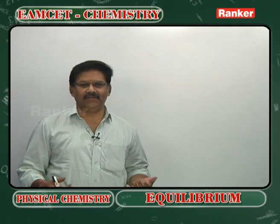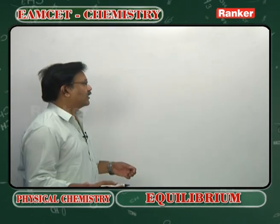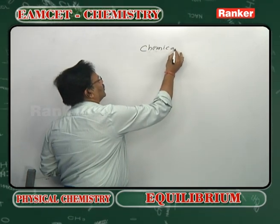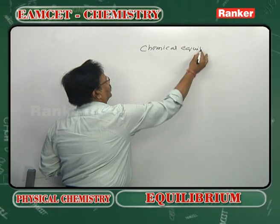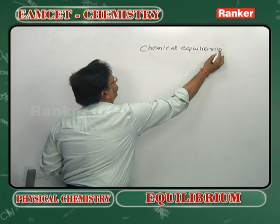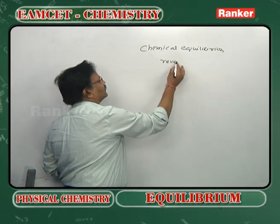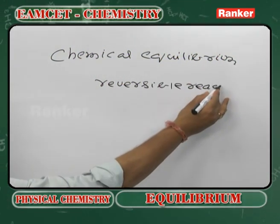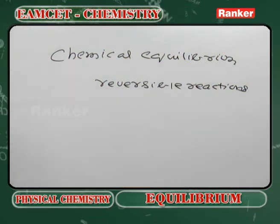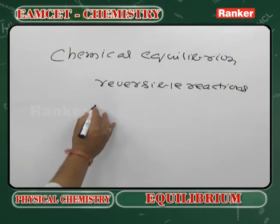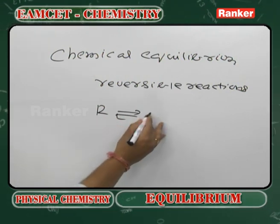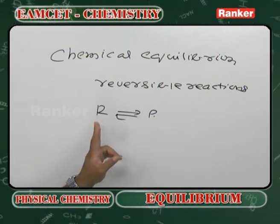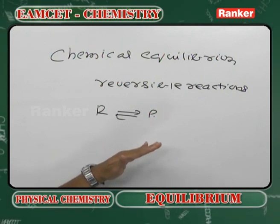We will be discussing chemical equilibrium. Chemical equilibrium is a phenomenon. It is the characteristic property of reversible reactions. Reversible reactions are reactions in which conversion of the reactants into products and products into reactants takes place simultaneously under similar conditions of temperature and pressure.